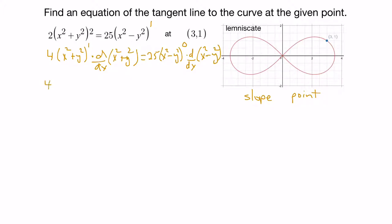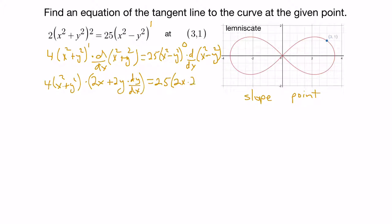So we get 4(x² + y²), and the derivative of that inner expression is 2x + 2y · dy/dx, since we're using implicit differentiation. On the right side, the term to the exponent 0 becomes 1, so 1 times 25 is 25, and with implicit differentiation we get 2x − 2y · dy/dx.